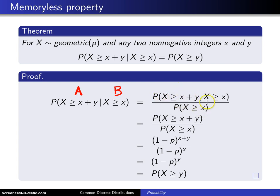This event in the numerator here, assuming that you have non-negative integers x and y, since X is being greater than or equal to x plus y, and X is greater than or equal to x here, this second piece of the event is superfluous, so you can simply write this as X is greater than or equal to x plus y. This is divided by the probability X is greater than or equal to x.